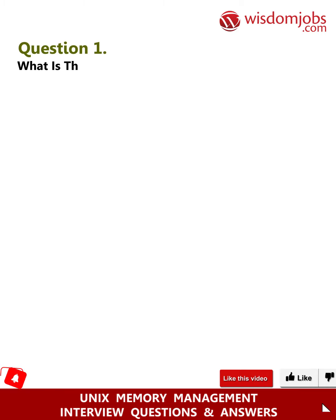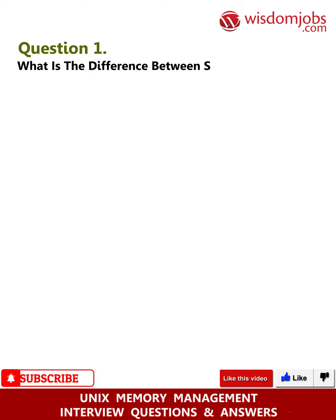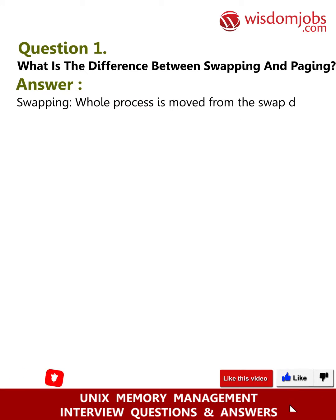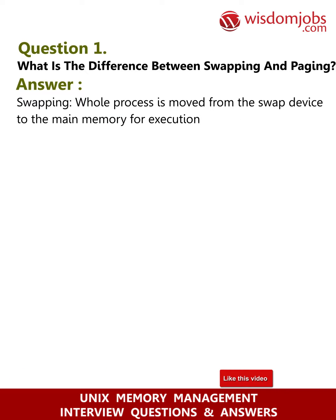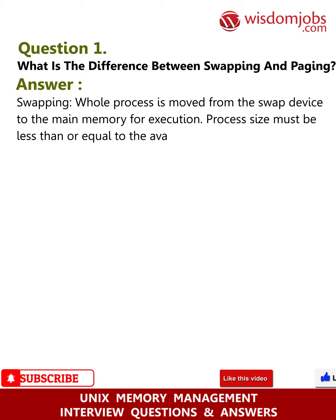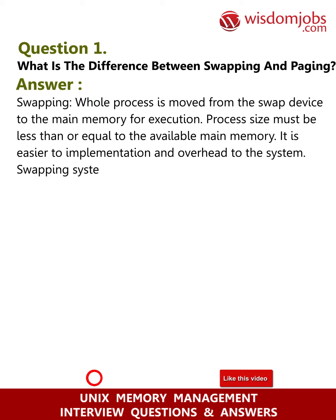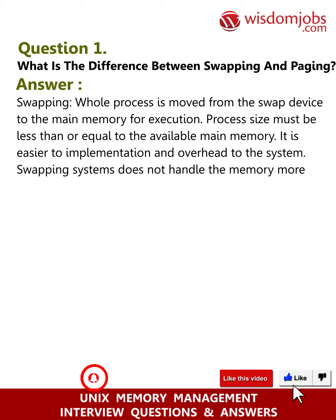Question 1: What is the difference between swapping and paging? Answer - Swapping: The whole process is moved from the swap device to the main memory for execution. Process size must be less than or equal to the available main memory. It is easier to implement but adds overhead to the system. Swapping systems do not handle memory as flexibly as paging systems.